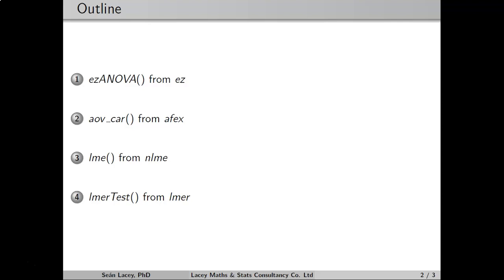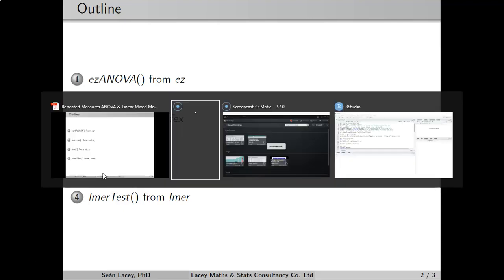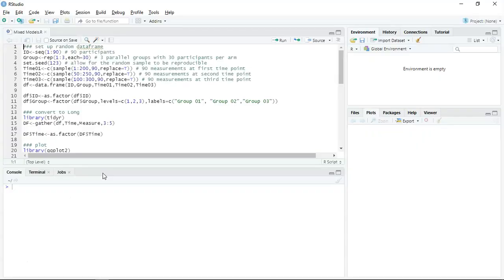When looking at Linear Mixed Models, I'd often use the LMER function as opposed to the LME function, but for the purposes of this video I'll show a script to do both because I know that both functions are quite popular. So what I'm going to do here is just set up a data frame for a random set of numbers in RStudio.